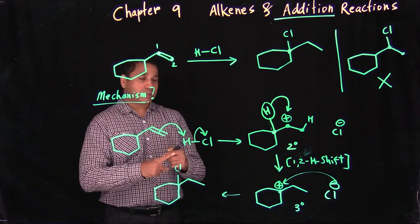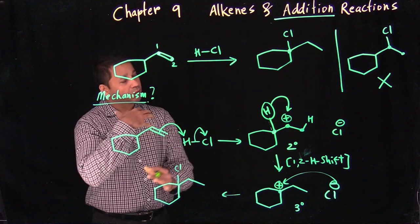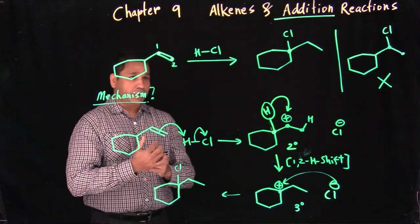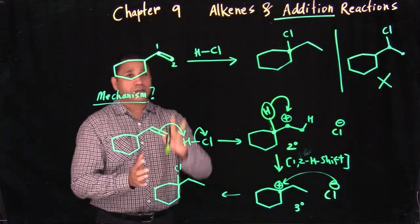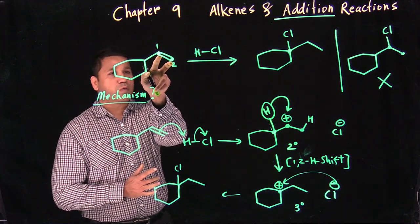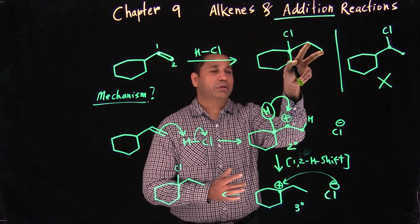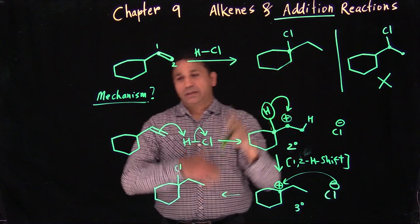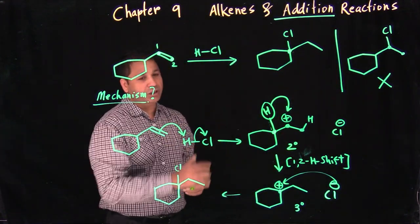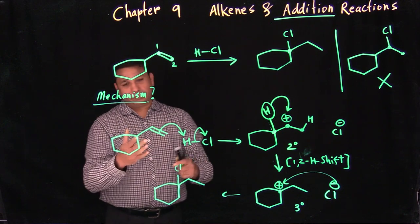After the 1,2-hydride shift, Cl⁻ attacks the tertiary carbocation to give the observed product. Going forward, when you see an unusual product — where the reaction seems to be happening on a carbon other than C-1 or C-2 — think about hydride shifts, methyl shifts, or resonance to explain it.